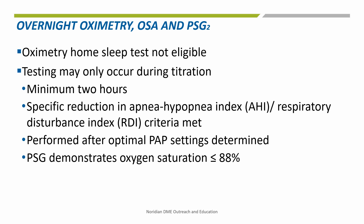A qualifying oxygen saturation test may only occur during a titration polysomnographic study, either split night or standalone, if all the following criteria are met: the titration is conducted over a minimum of 2 hours, and during titration the apnea hypopnea index (AHI) or respiratory disturbance index (RDI) is reduced to less than or equal to an average of 10 events per hour. Or, if the initial AHI or RDI was less than an average of 10 events per hour, the titration demonstrates further reduction in the AHI or RDI.